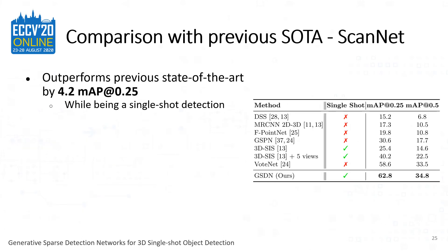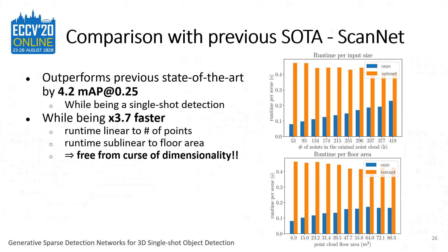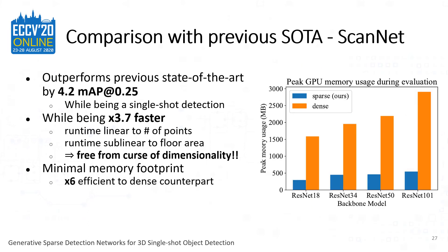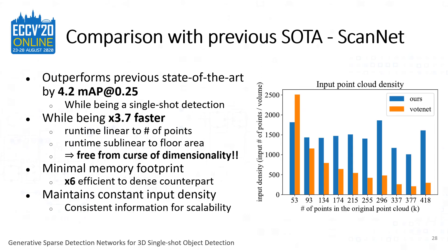We evaluate our proposed method on the ScanNet V2 dataset. Our method outperforms the previous state-of-the-art by 4.2 MAP while being a single-shot detection method, and is 3.7 times faster than the previous state-of-the-art. The runtime is linear to the number of points and sub-linear to the floor area, demonstrating the efficiency of our method. Our method also maintains a minimal memory footprint, being 6 times more efficient compared to its dense counterpart, and maintains constant input density compared to previous methods which subsample a fixed number of points, allowing consistent information for better scalability.